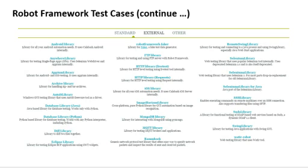There are also many external libraries such as the Android library, AppiumLibrary, AutoIt, Database library, SeleniumLibrary, Selenium2Library, SeleniumLibrary for Java, HTTP, Swing, and others. These are not part of the standard installation but are available free of cost to download and install. With the help of these libraries, we can automate almost all applications — Robot Framework has very rich support for automation.